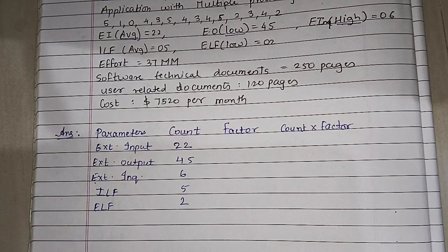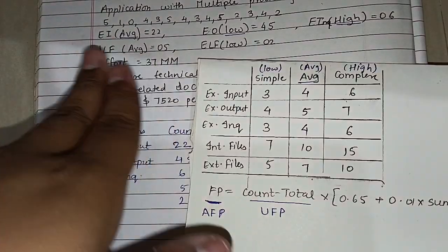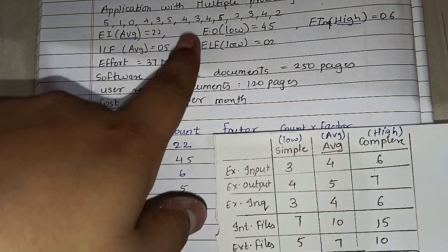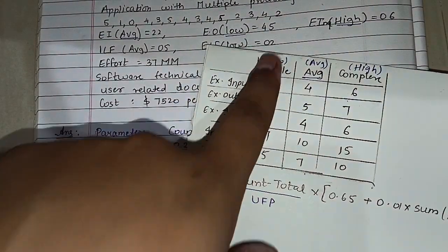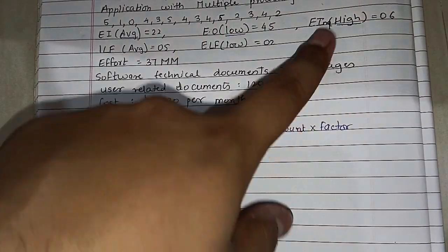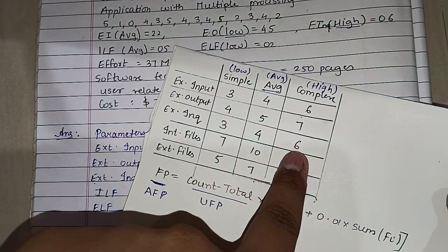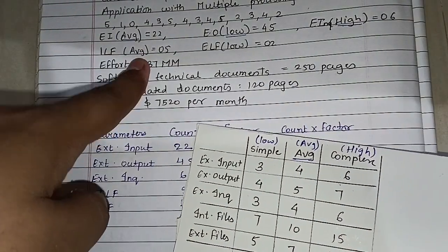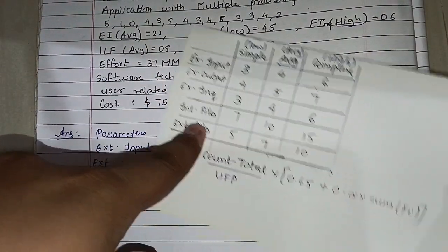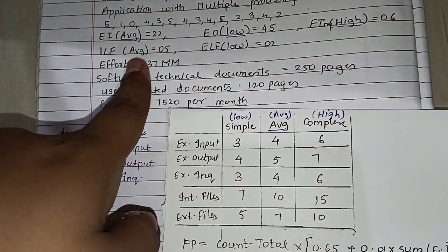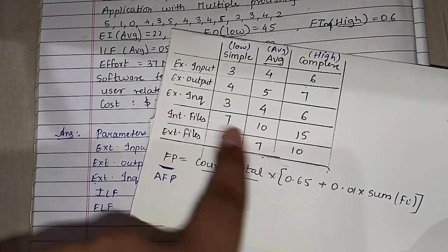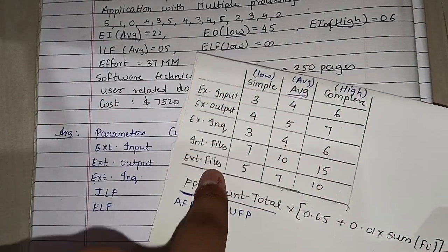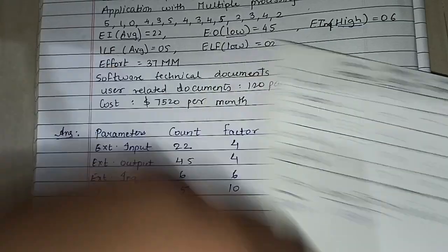Now for the factor, we use the table. External input is average, so factor is 4. External output is low (simple), factor is 4. External inquiries is high, factor is 6. ILF is average — for internal logical files, average is 10, so factor is 10. External logical files is low, and for low the factor is 5.